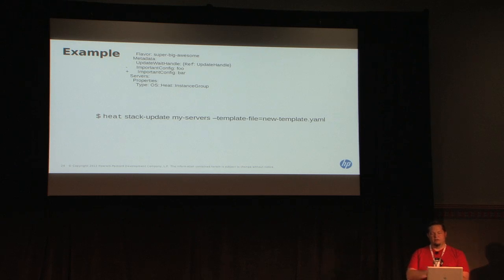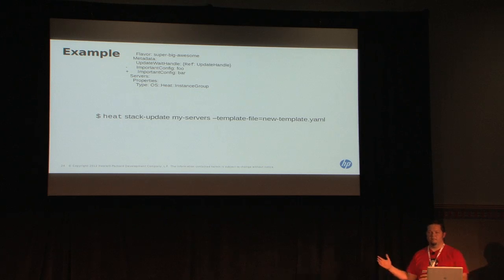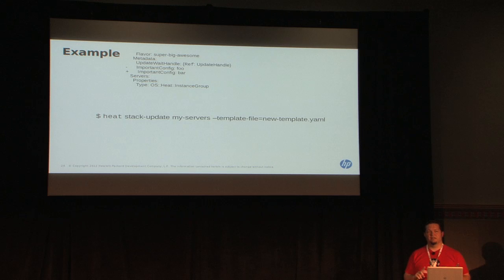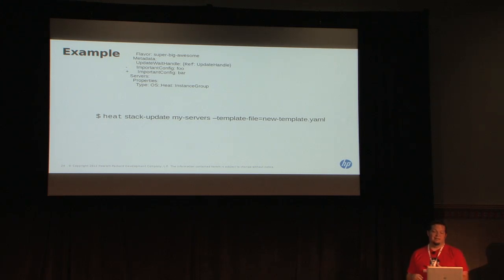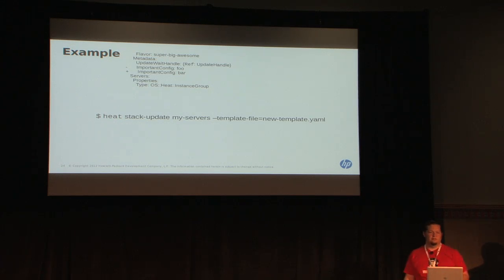Right now Heat doesn't do rolling updates in all that intelligent a way — it's still a copy of CloudFormation. Only about three weeks ago, CloudFormation announced rolling updates, which is the feature I need in Heat the most to deploy OpenStack. What you're doing is basically telling Heat to expose this new view to those servers. From a continuous deployment standpoint, I can deploy this into my testing rack and get hard answers on whether it's actually going to work.